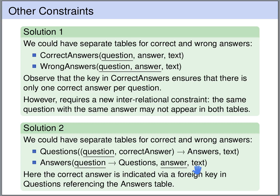Now, to classify the answers into correct and incorrect ones, the trick is to include a foreign key to the answers table in the questions table. We include the question number and the letter of the correct answer — stored as an attribute called 'correct answer' — and these two together form a foreign key referring to the answers table. This ensures that the combination of question and letter indeed exists in the answers table, and since for every question we only include one correct answer letter, every question has at most one correct answer.